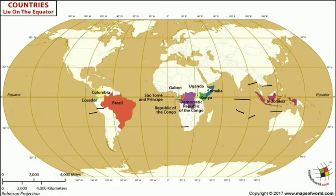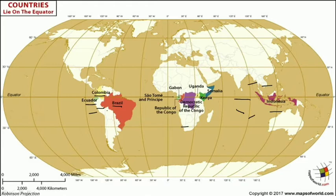In South America you will find Ecuador, Colombia, and Brazil. These are the three countries that are located on the western part of the globe and are passed by the equator.